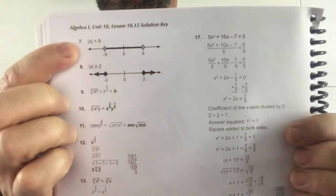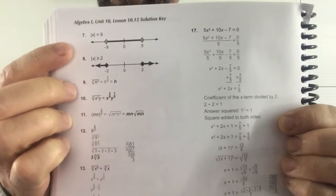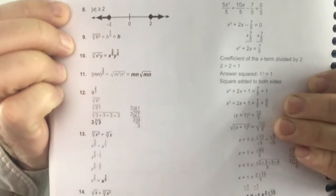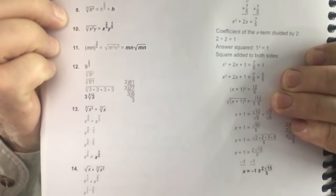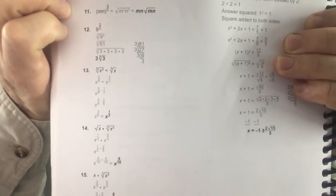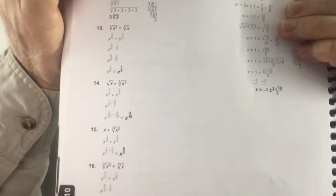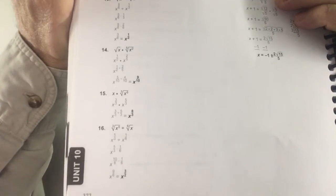Number 7 at the top. 8, 9, 10, 11, 12, 13, 14, 15, and 16.